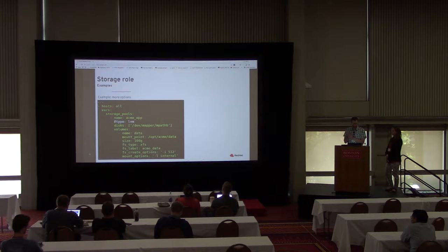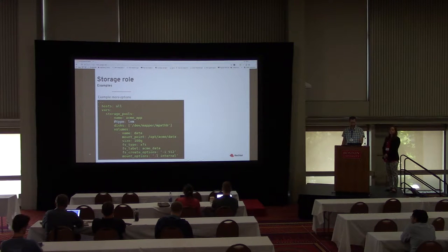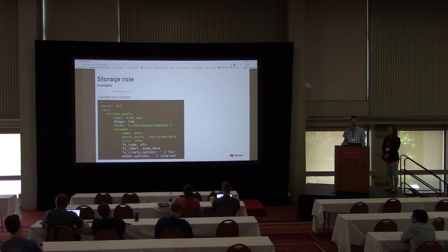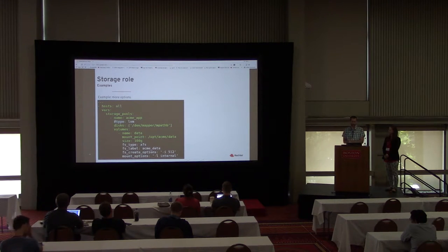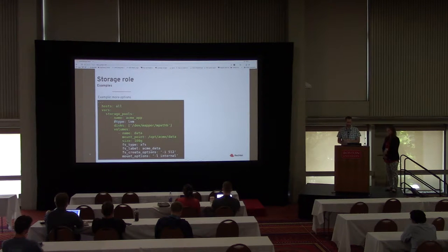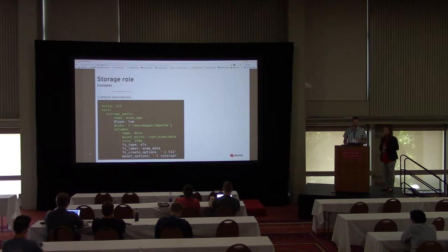One more example showing additional options: you can specify a filesystem label, options to mkfs, and mount options — which are also written to fstab. That should cover a good bit beyond the absolute simplest use cases.